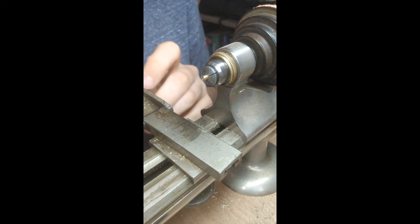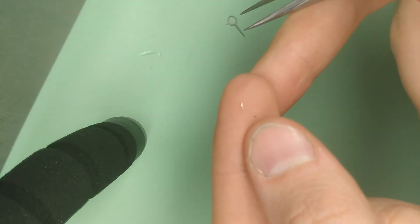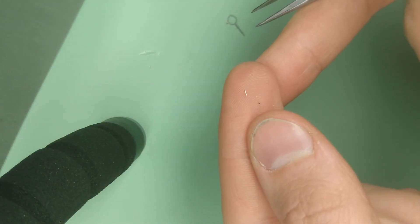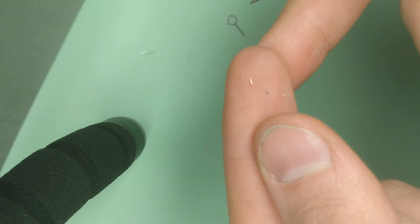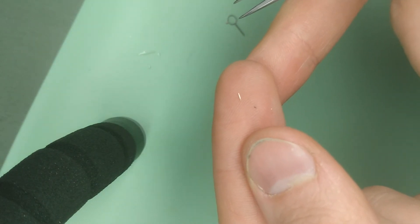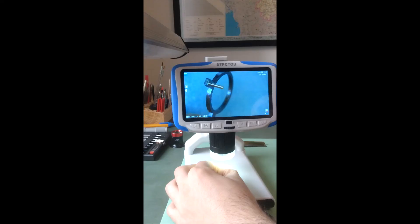There we go. So there's our taper pin, about 1.5mm long by 0.2mm thick. A little over 0.2 at its thickest point.